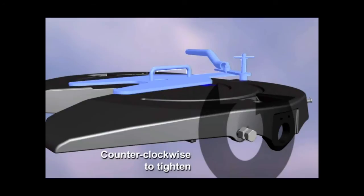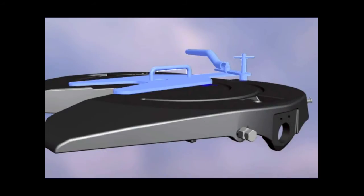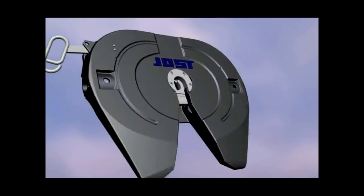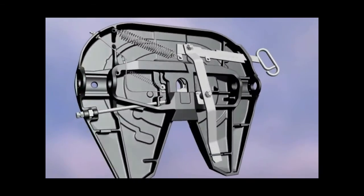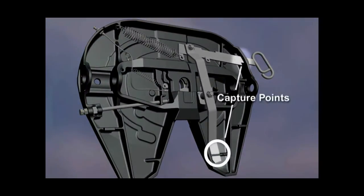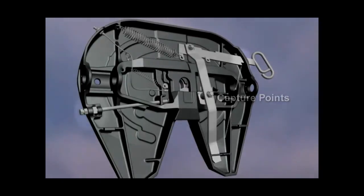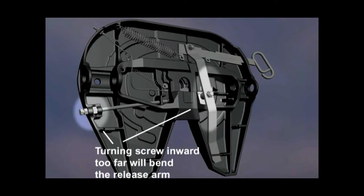Remember, always turn the adjustment screw counter-clockwise to tighten. Use care not to turn the wrong direction as this can damage the release arm. Here's why. The release arm is captured at the pivot on the bottom and the release handle at the top. Turning the wrong direction will bend the release arm.